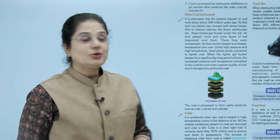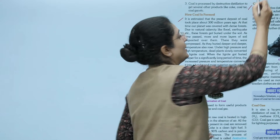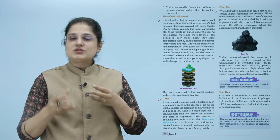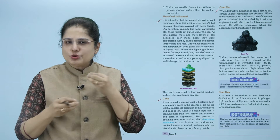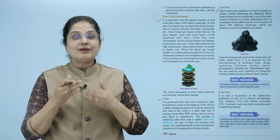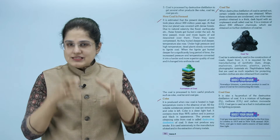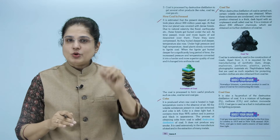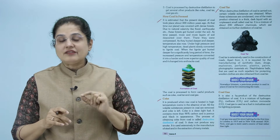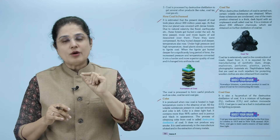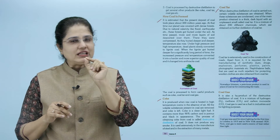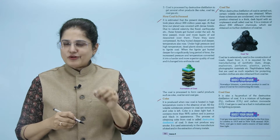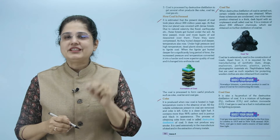Now let us look at coal tar। Coal की destructive distillation होने पर कुछ volatile substances मिलते हैं। इन substances को जब हम condense करते हैं तो एक main product हमें मिलता है जो thick dark liquid के form में होता है जिसकी बड़ी गंदी smell होती है। इसको कहते हैं coal tar। It is a mixture of about 200 different chemicals which are obtained on further distillation of coal tar।